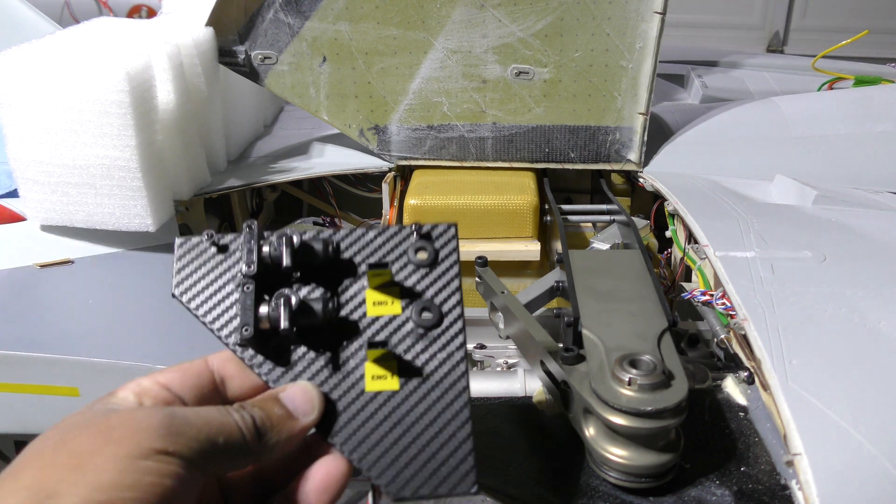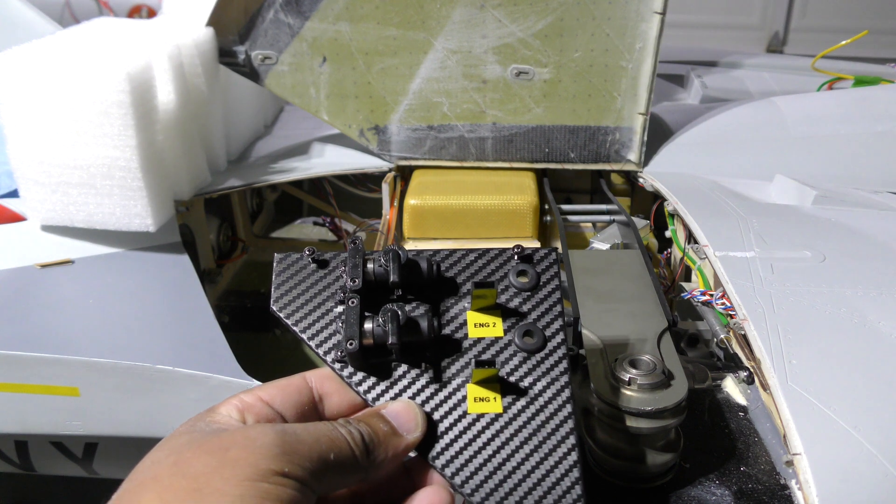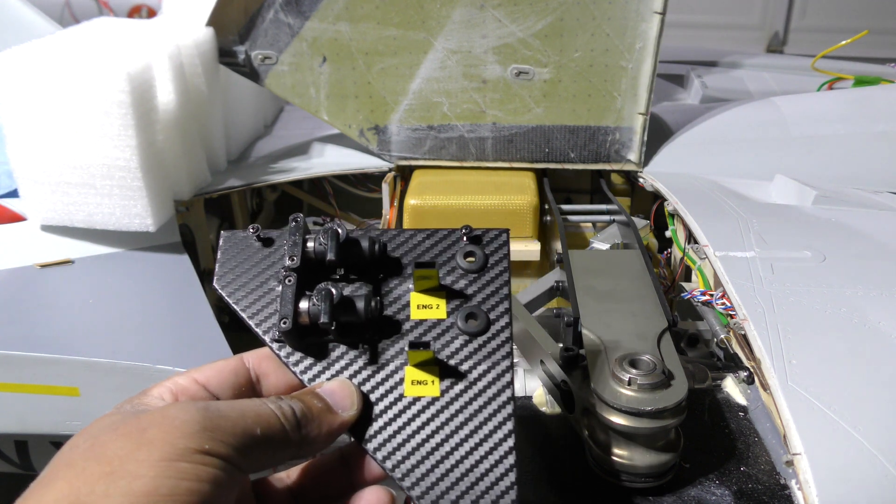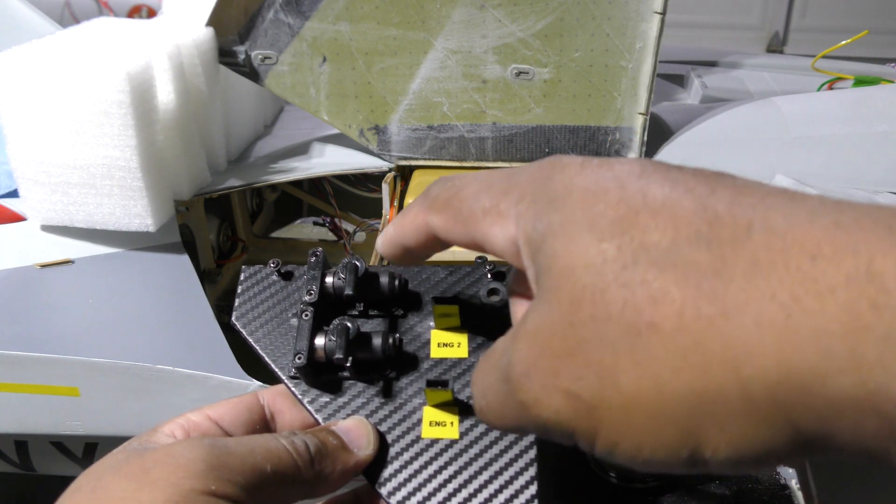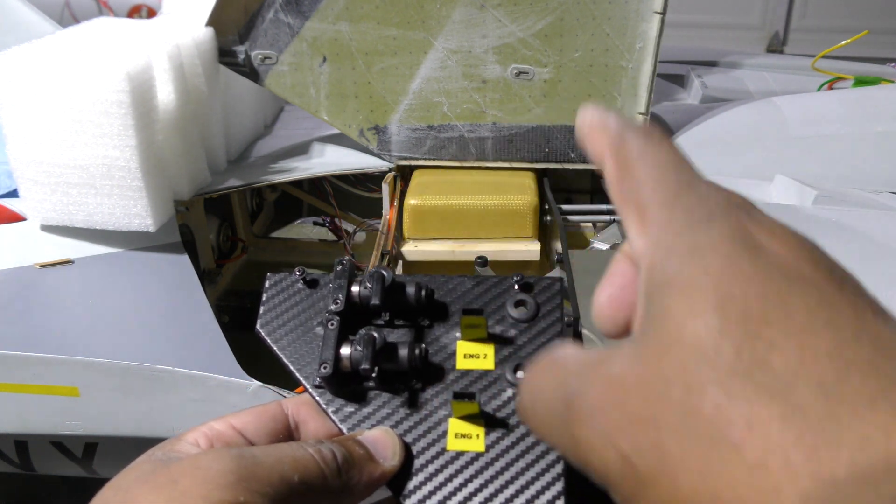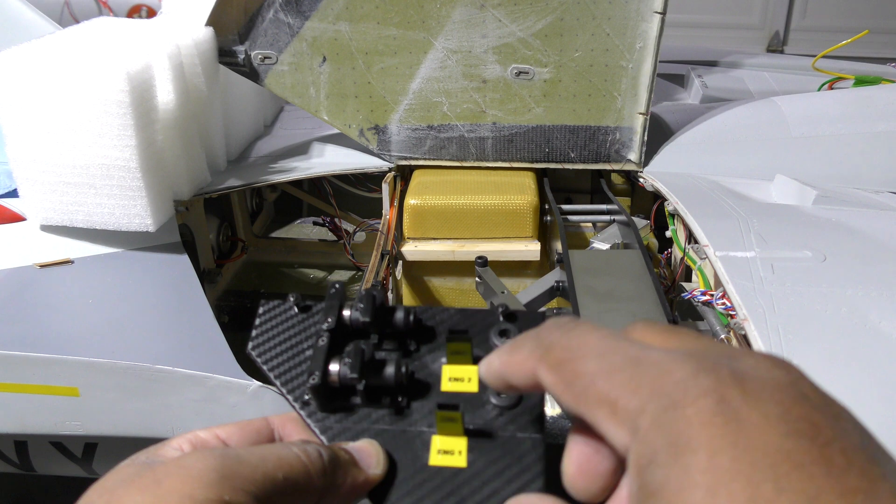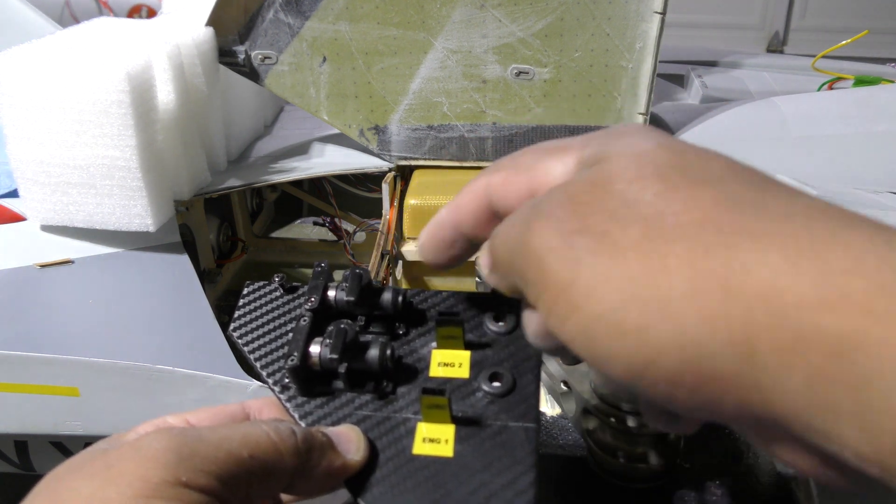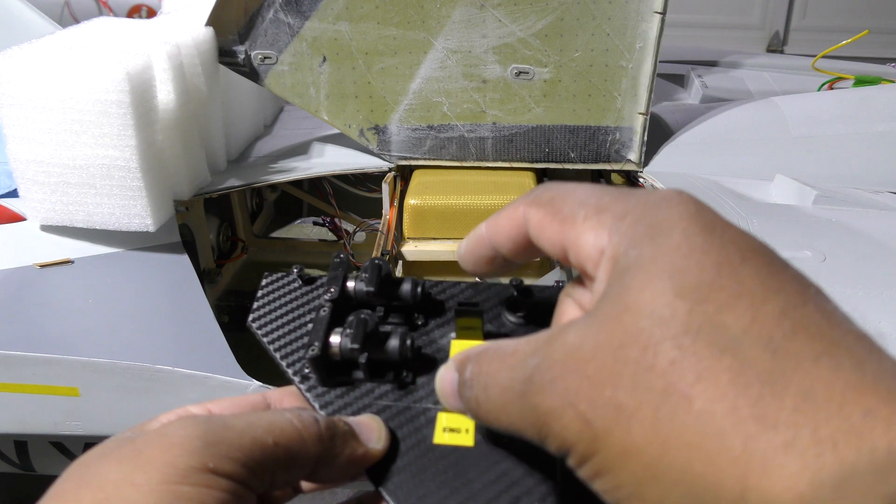I've decided to have all the turbine stuff on one plate and all the air stuff on the other plate. What you see here are the two fuel shutoff valves for engine one and engine two, and these are the GSU plugs for them. Those will have the ability to talk via these wires to all the ECUs up in the front of the nose.